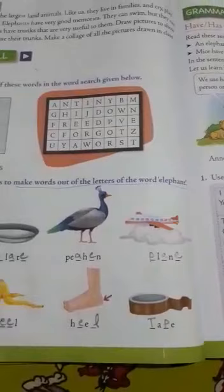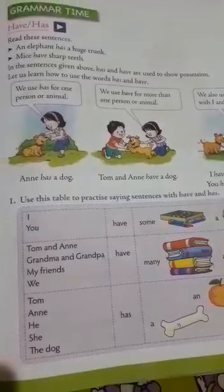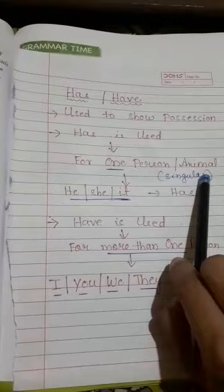Now coming to the grammar time, use of has and have. We will learn where to use has and where to use have. Has and have is used to show possession. Possession means things belonging to. So where to use has? Has is used for one person or animal — with a singular noun we will use has.